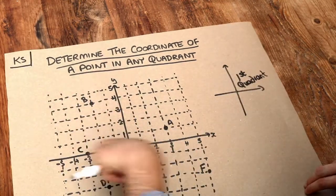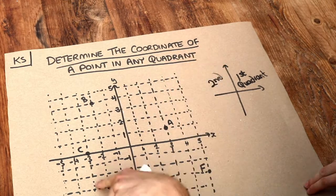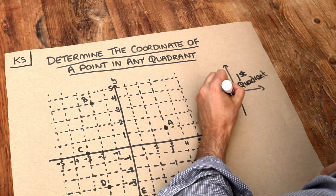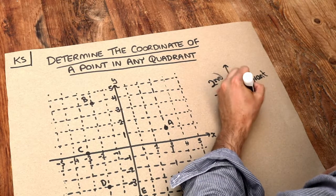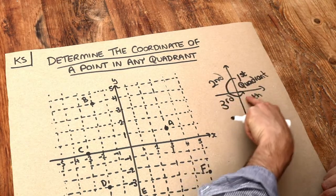But we've also got the second quadrant over here, the third quadrant down here, and the fourth quadrant down here. And notice these go in an anti-clockwise fashion.